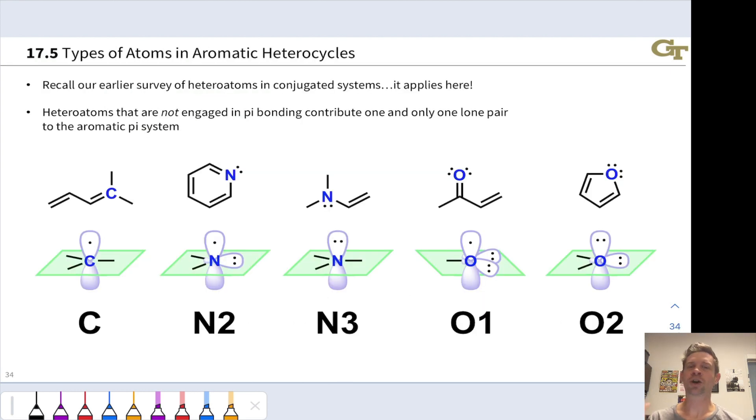Aromatic heterocycles are conjugated systems. Now is a good point to recall our coverage of the structures of heteroatoms within conjugated systems. All of those ideas apply here in the context of aromatic heterocycles. We want to keep in mind that heteroatoms not engaged in pi bonding can contribute one and only one lone pair to the aromatic pi system. A given heteroatom can never contribute more than two electrons to a pi system. This is still true in a heteroaromatic context, and in fact, this pyridine ring is an aromatic heterocycle.